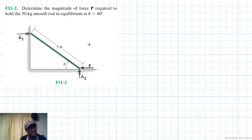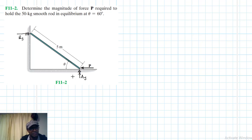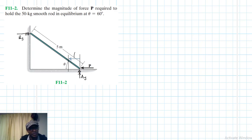Now let's apply a virtual displacement. You can apply it at either B or A — let's apply it at A. You can apply it in the opposite direction of P or the same direction. Let's apply it in the same direction. Let's call this virtual displacement δx_A.